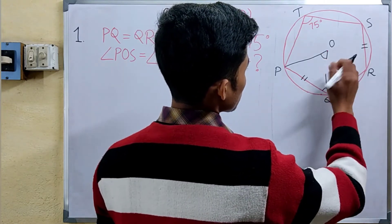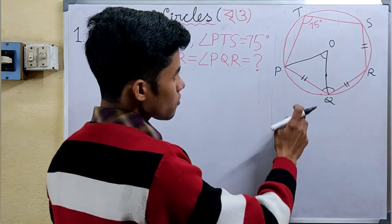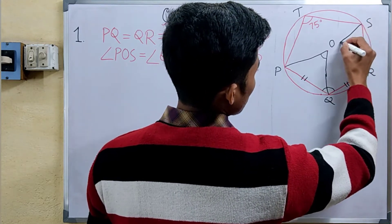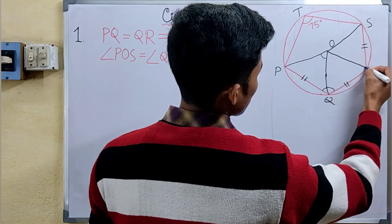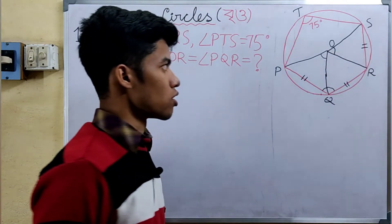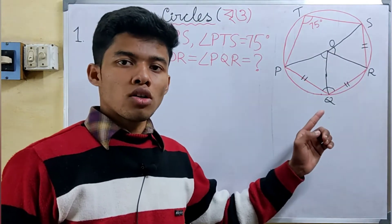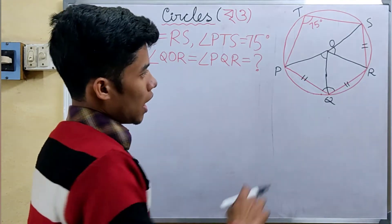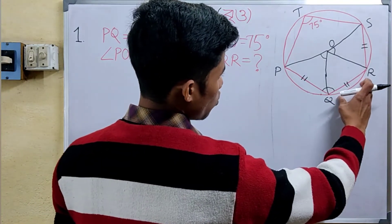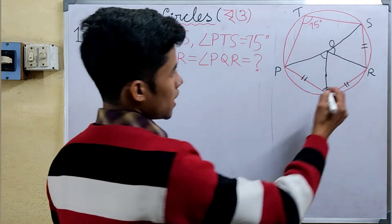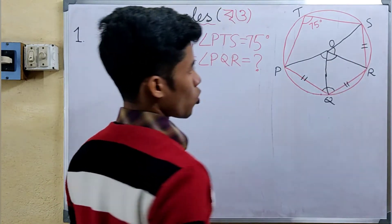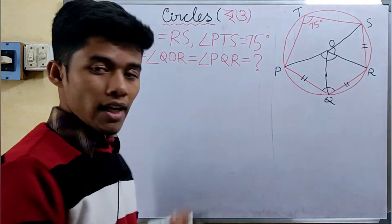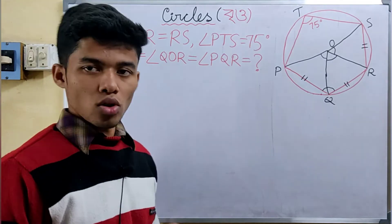POQ is produced by the arc PQ, and similarly RS produces another central angle. According to the theorem, since the arcs are all equal, the central angles POQ, QOR, and ROS are all equal to each other — each equal to A.